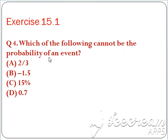Which of the following cannot be the probability of the event? Then we can have the answer that option B, -1.5, cannot be the probability of any event. So this is the correct answer.